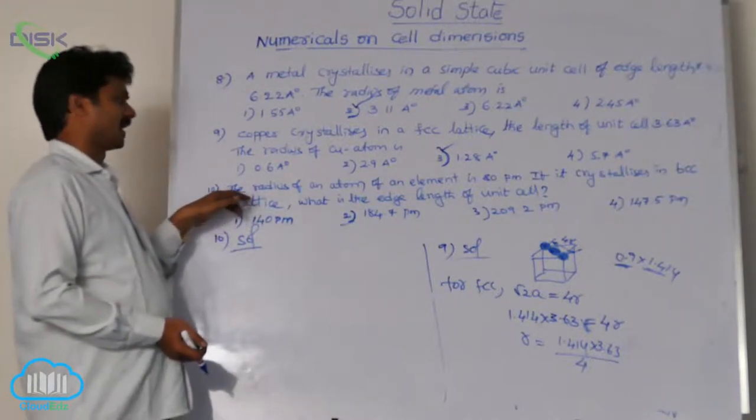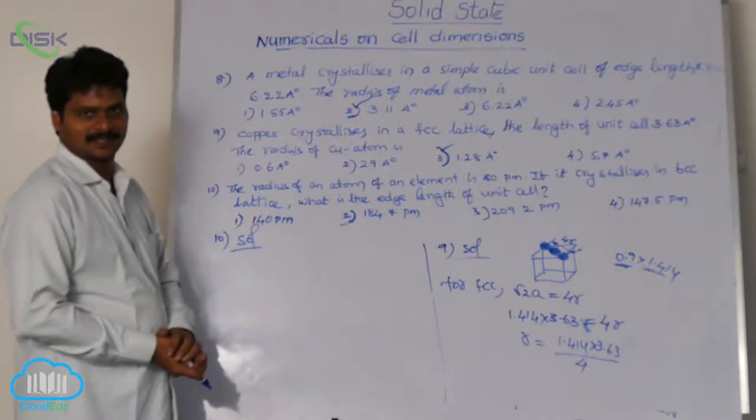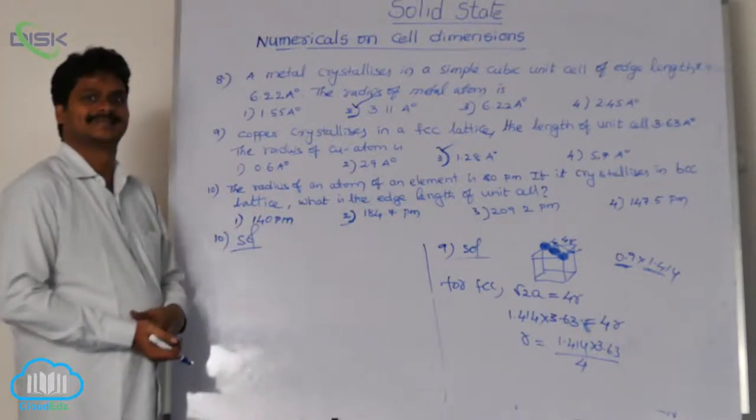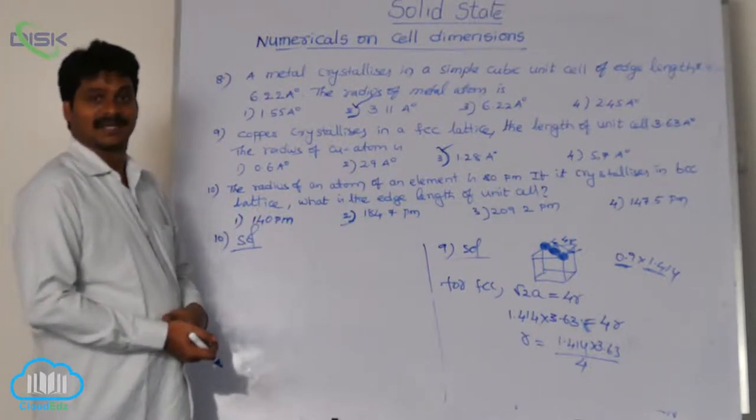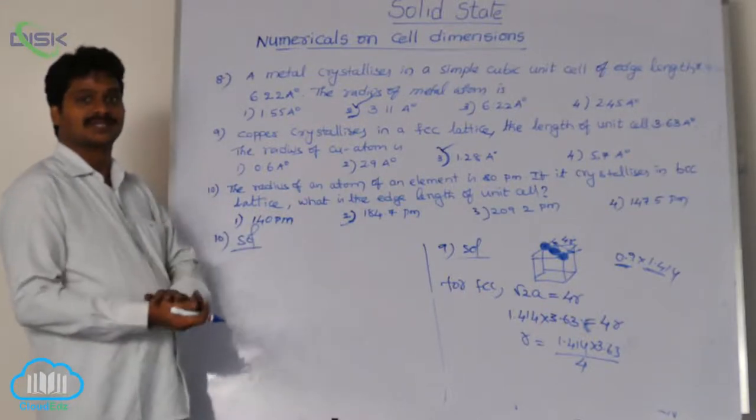Now, radius is given and edge length is to be determined. What is the lattice? BCC. In BCC, which atoms are in touch with each other?